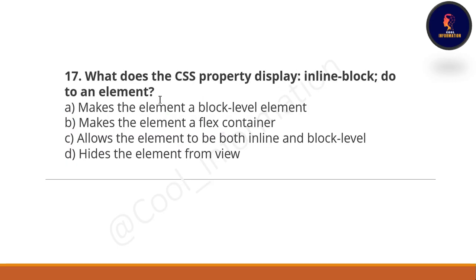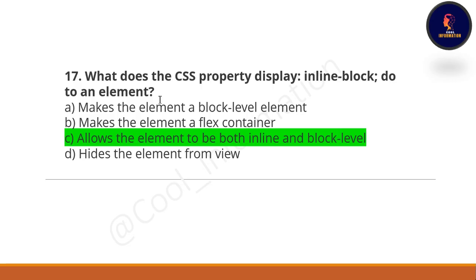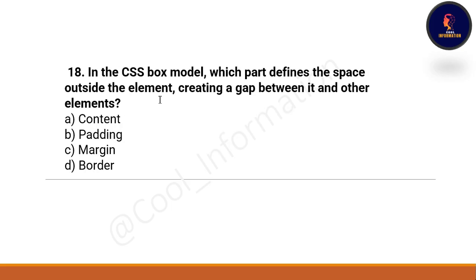Question 17: What does the CSS property display inline-block do to an element? Option A: makes the element a block-level element. Option B: makes the element a flex container. Option C: allows the element to be both inline and block-level. Option D: hides the element. The correct option is option C — allows the element to be both inline and block-level.